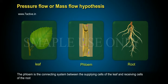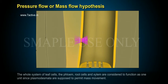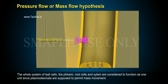The phloem is the connecting system between the supplying cells of the leaf and receiving cells of the root. The whole system of leaf cells, the phloem, root cells, and xylem are considered to function as one unit, since plasmodesmata are supposed to permit mass movement.